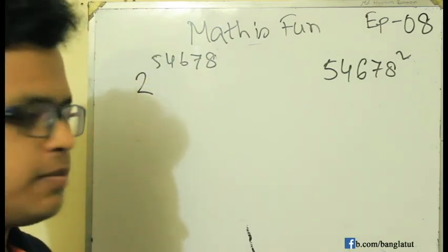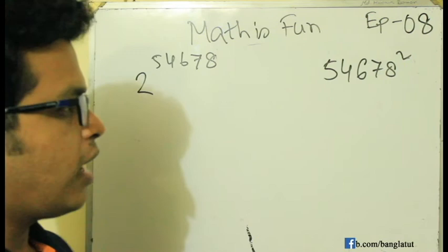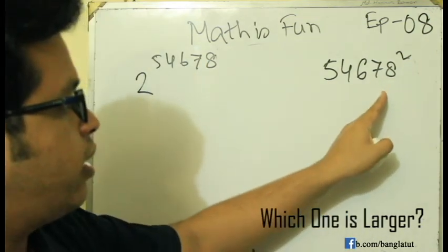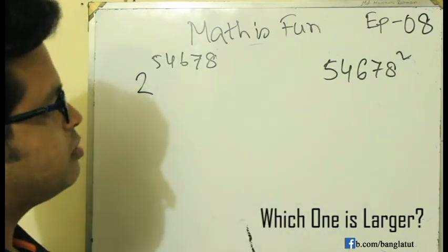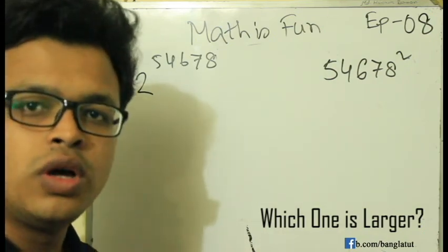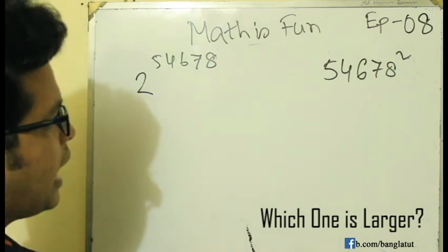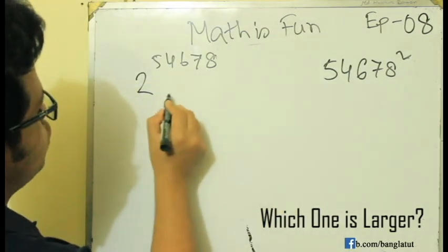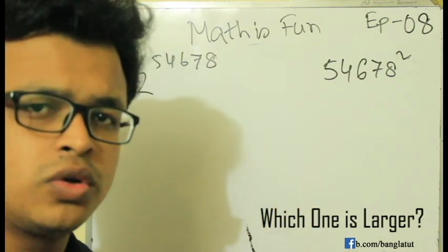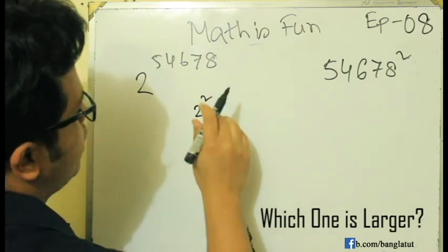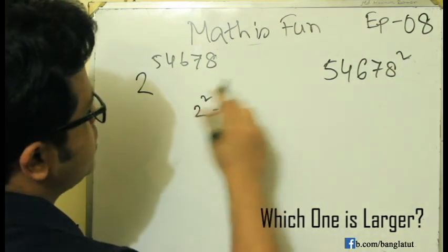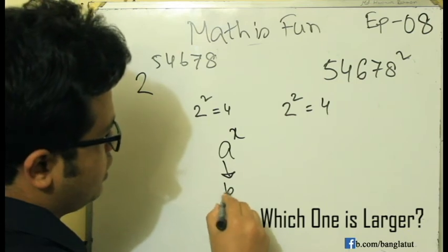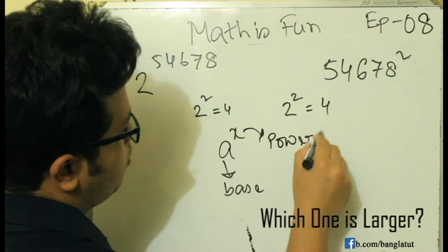In this problem, we need to solve a question involving power of power. The problem number is 2 to the power 54678. We will solve this step by step. Power of power — when we have a power of power, it is equal to the square root.